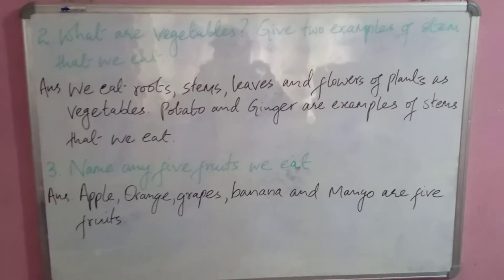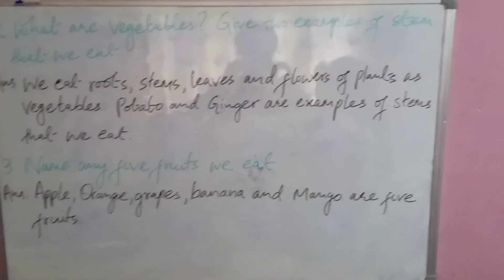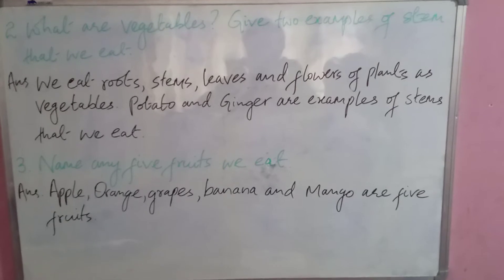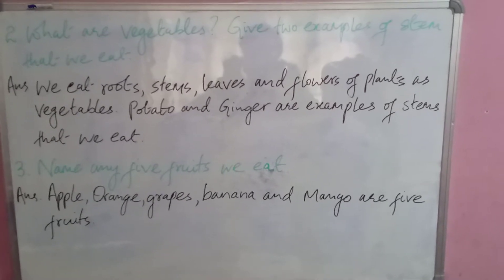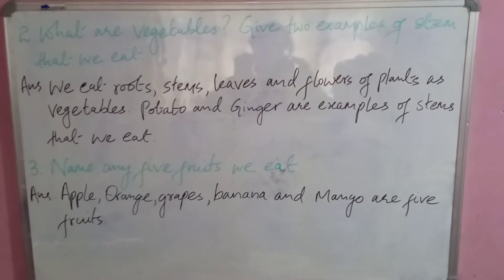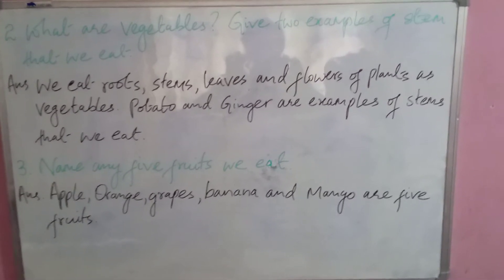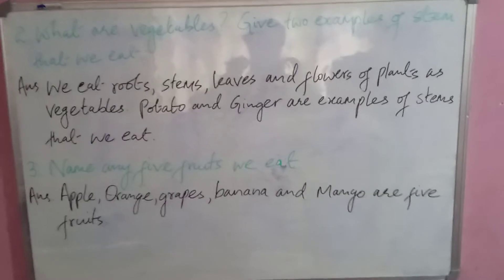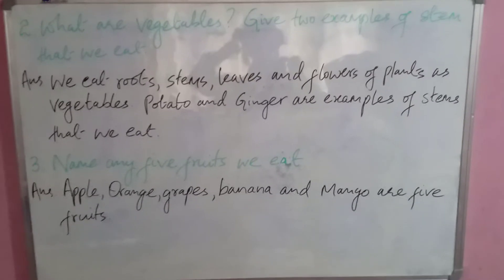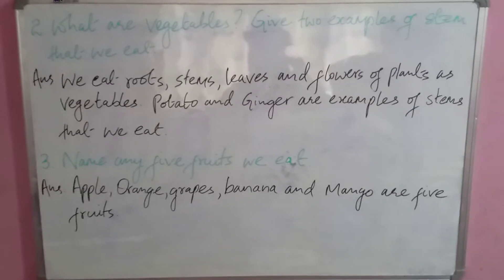Question number three: name any five fruits that we eat. Write the names of five fruits — that will be apple, orange, grapes, banana, and mango. You can also write other fruits on your own.